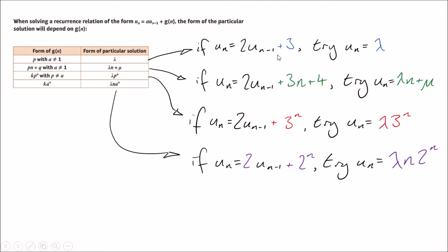So if the function on the end is just a constant, then we try plugging in a constant. That makes sense. If the function on the end is linear, we try plugging in a linear thing. When the function on the end is a power of n, or something to the power of n I mean, then we try something to the power of n.